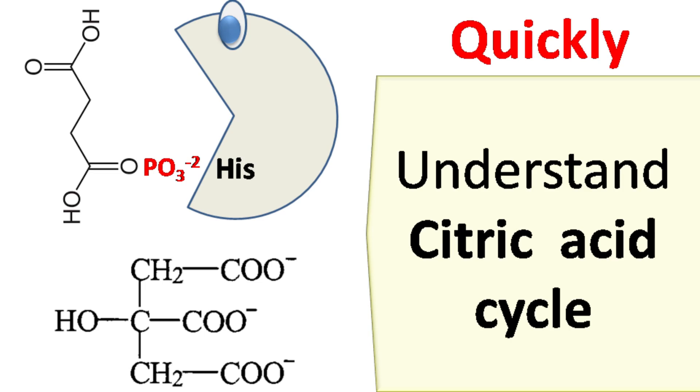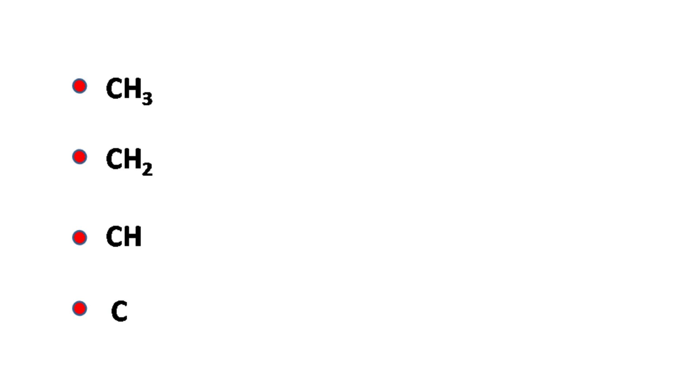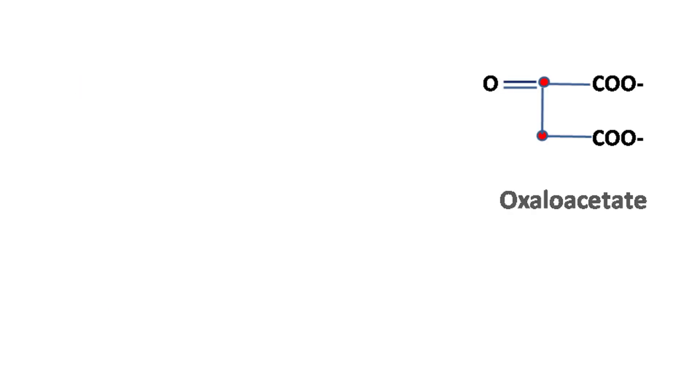Now to make things easy, carbon atoms are shown as a red dot and hydrogen atoms are shown around the carbon atom only when they are involved in a reaction.